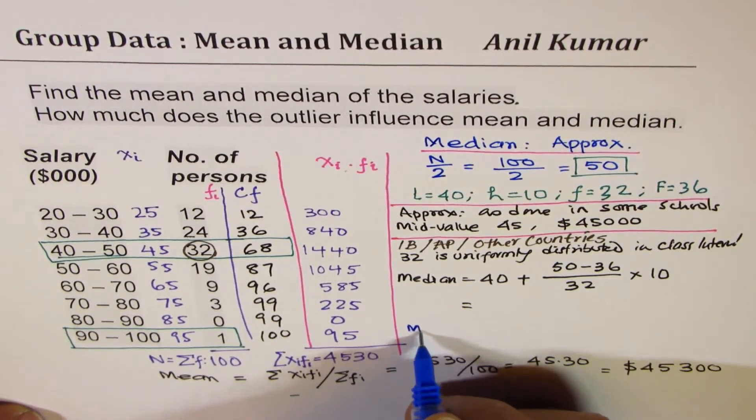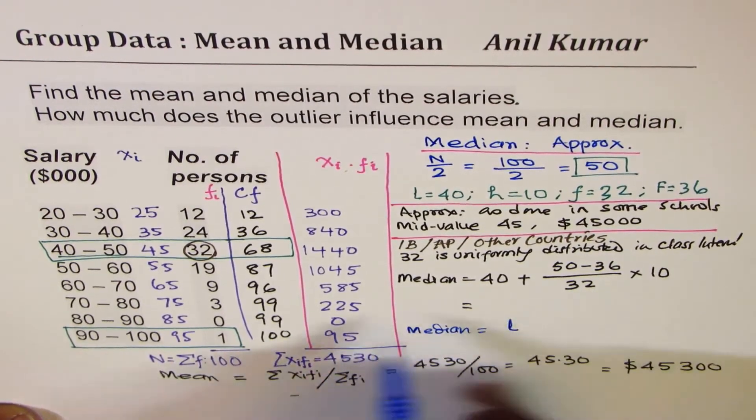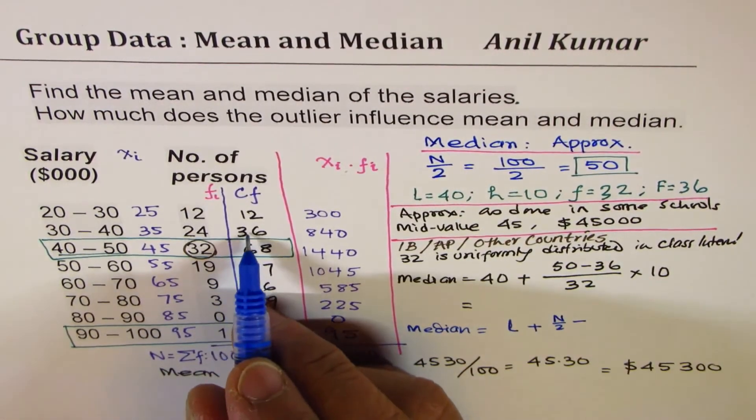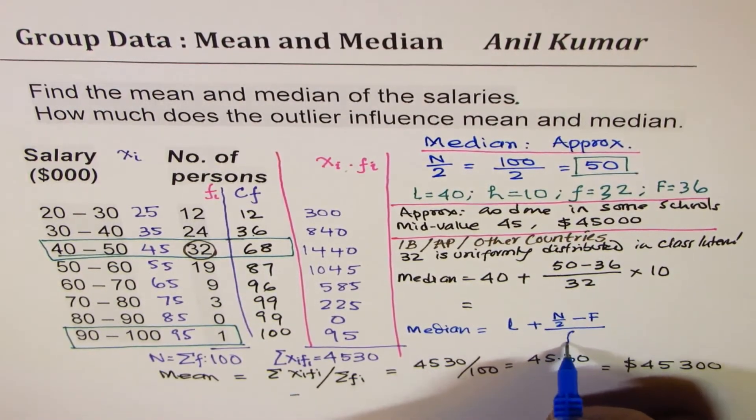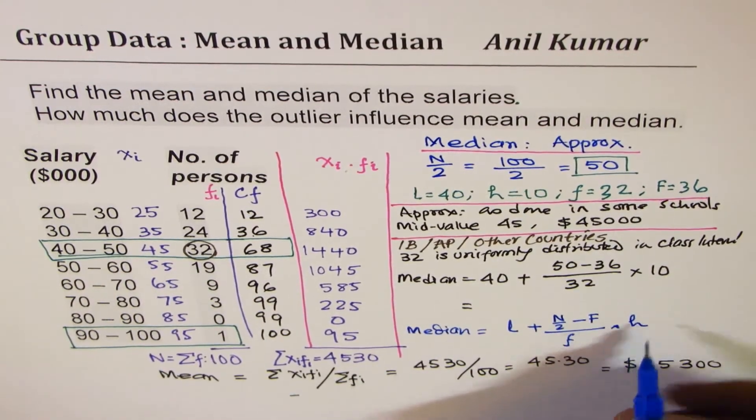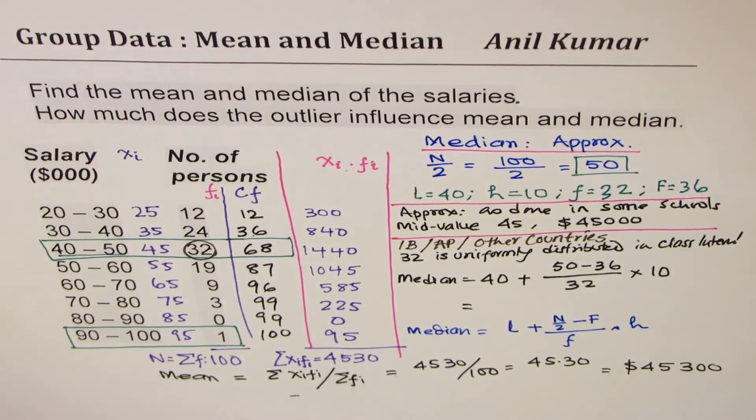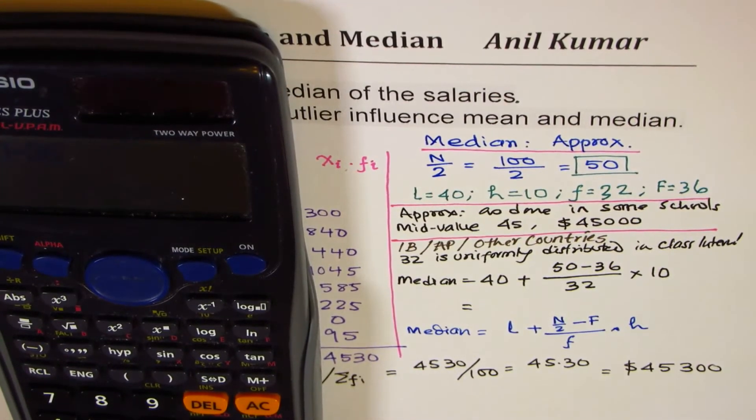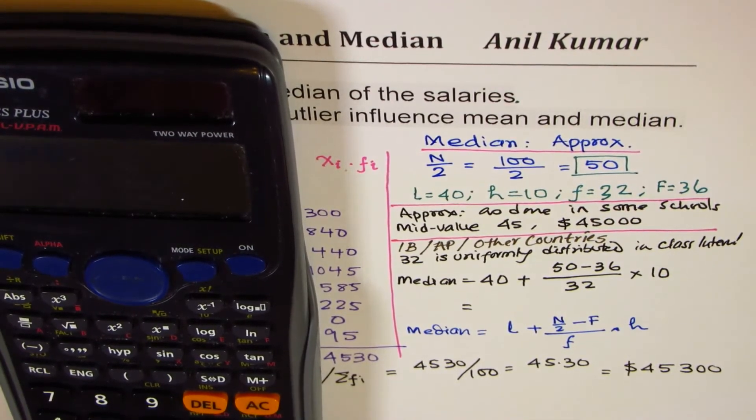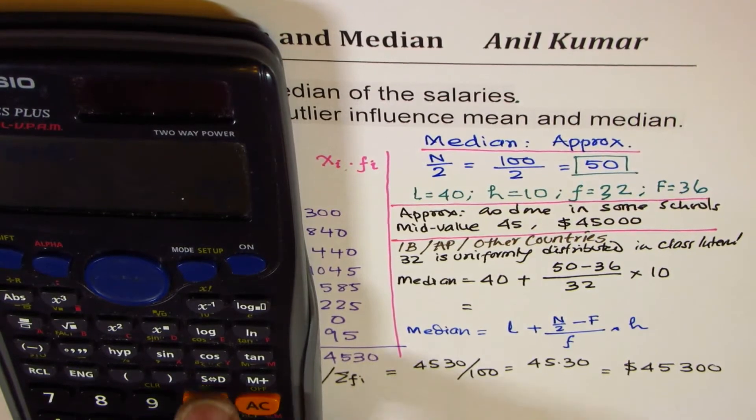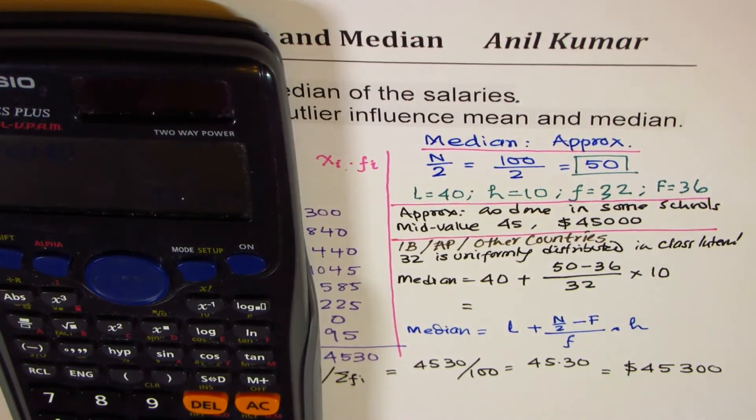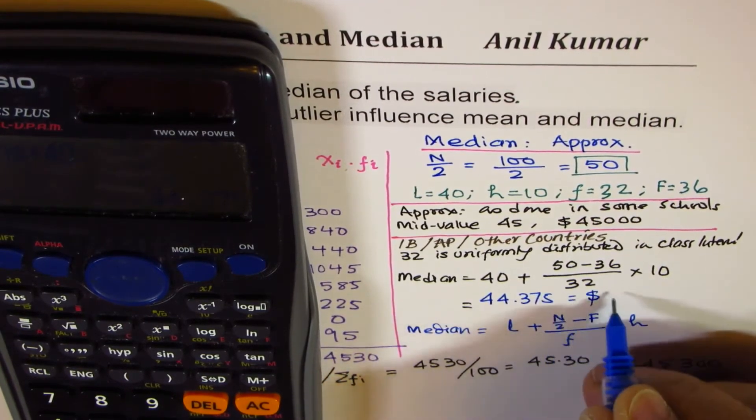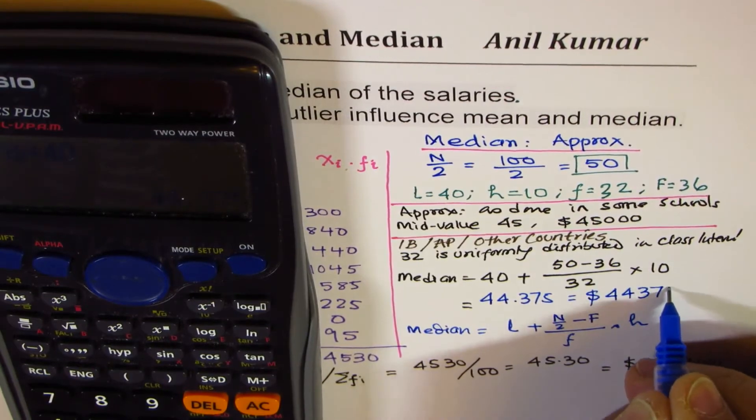Let me write down the formula for benefit of most students. So median is L, the lower limit of this class, plus N by 2 minus the frequency of the previous cumulative frequency F, over the frequency of the group of our interest, times the class interval H. Let's calculate the answer now. So the answer is 50 take away 36, divide by 32, times 10, and then we'll add 40 to this. So we get 44.375, or in dollars $44,375. So that becomes the median for us.